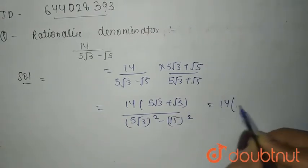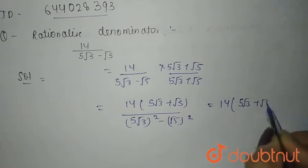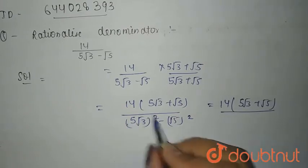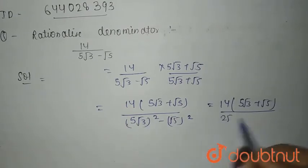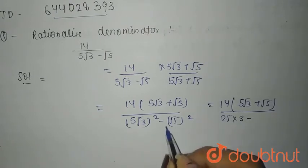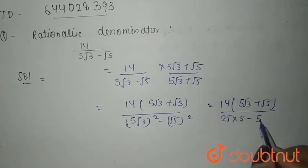So it gives you 5 root 3 plus root 5 into 14 divided by, 5 squared is 25 and root 3 squared is 3, minus root 5 squared is 5. This is 75 minus 5,